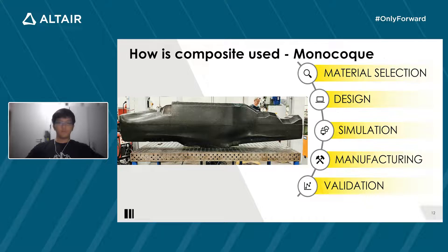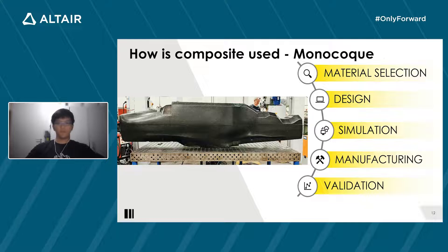This is an example of how a monocoque is designed. The first step is to select the material used. For the monocoque, a sandwich structure is used. The laminate consists of two types of carbon fiber: a high-modulus and a high-strength carbon fiber. The high-modulus fiber achieves high stiffness, and the high-strength fiber allows high strain. The core consists of aluminum honeycomb and foam. Different thicknesses are used to achieve optimized strength-to-weight ratios. Epoxy is used for the matrix.